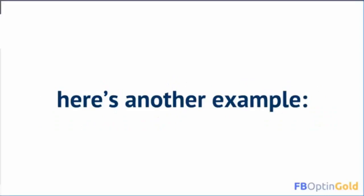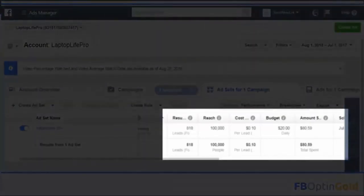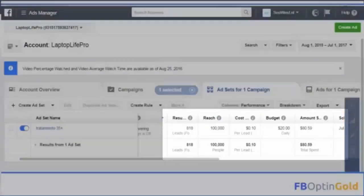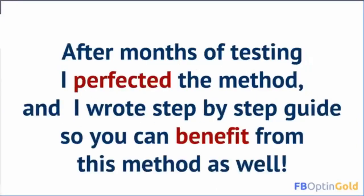Here's another example. As you can see here, I got 818 email addresses for just $80.59 — that's just $0.10 per opt-in. After months of testing, I perfected the method.